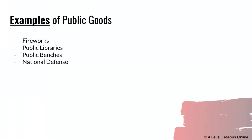Examples of public goods include fireworks, public libraries, public benches, national defence, street lights, and park benches. These are all public goods provided by the government for the people.